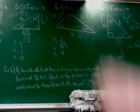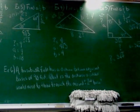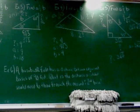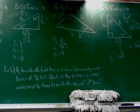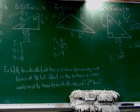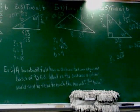A baseball field has a distance between adjacent bases of 90 feet. So when I'm talking about adjacent bases, I mean home to first, first to second, second to third. What is the distance a catcher would need to throw to reach the mound at second base?